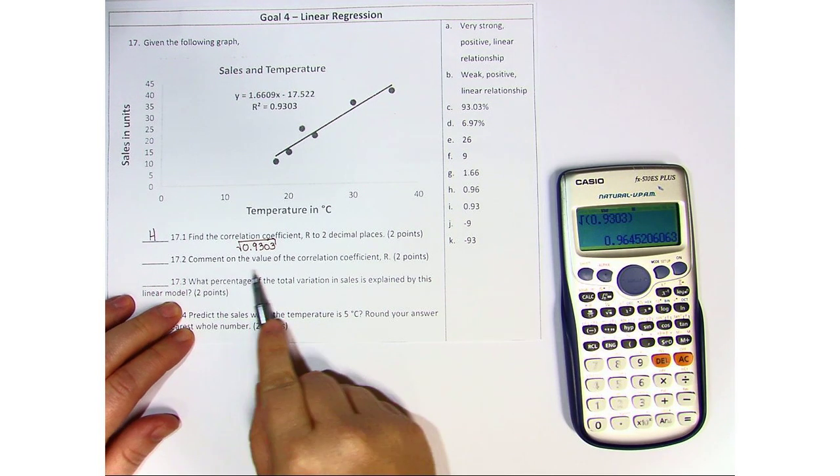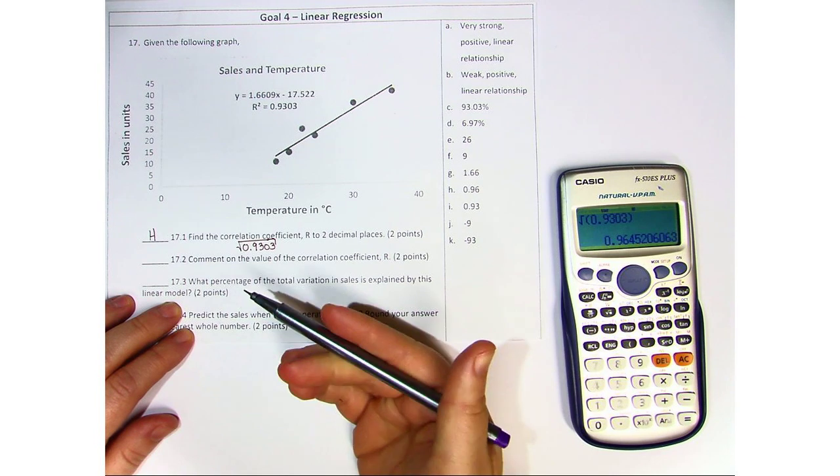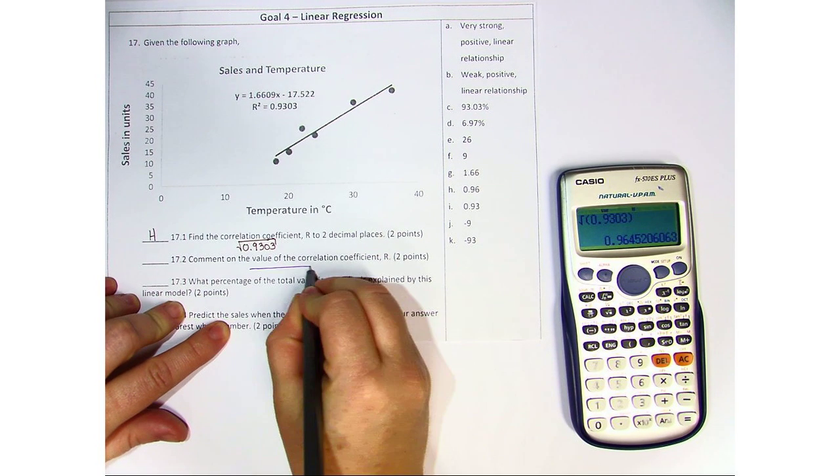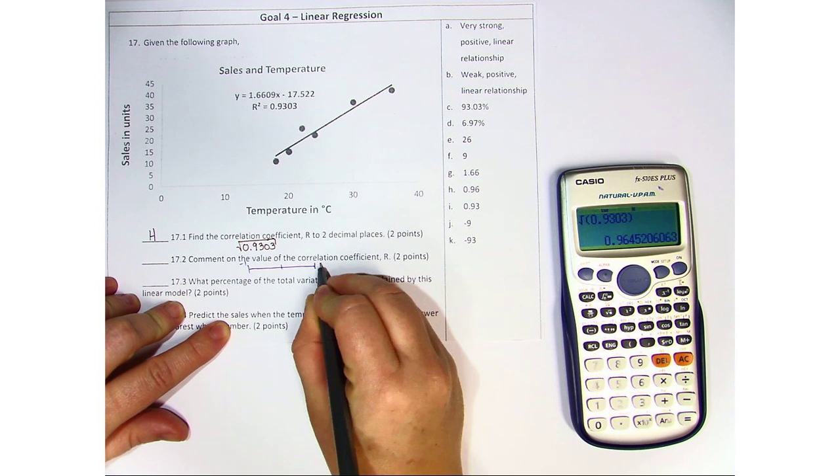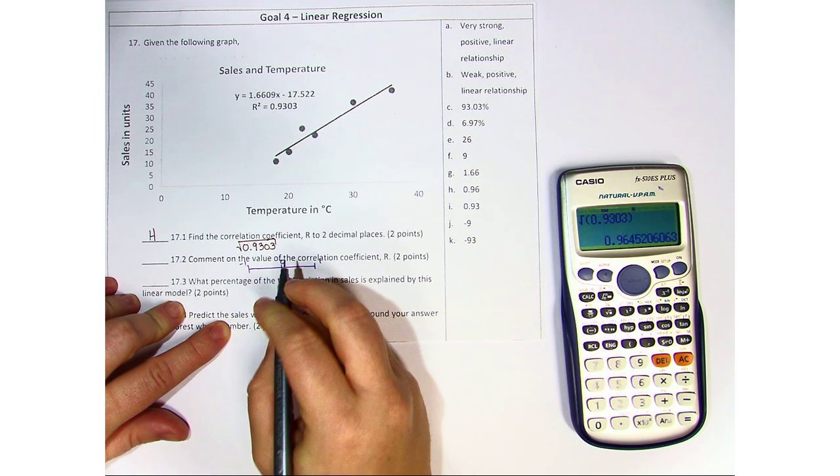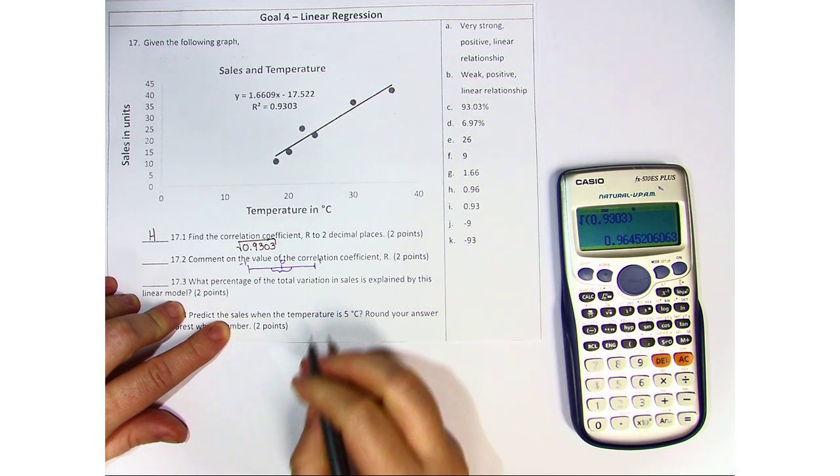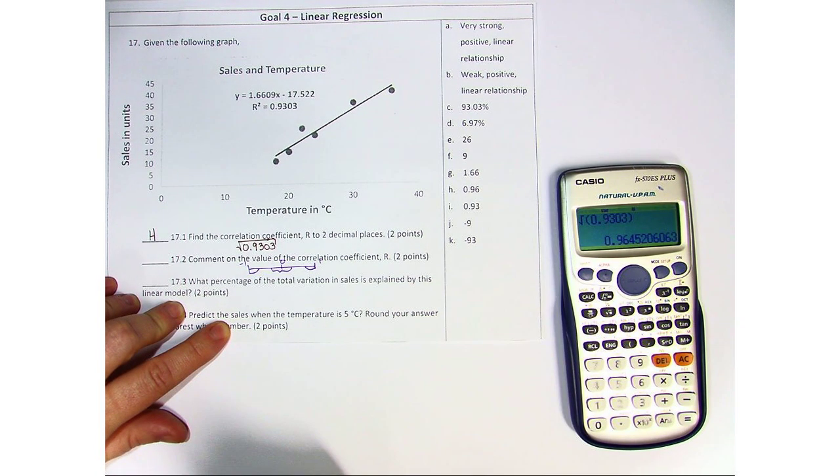The second question says, comment on the value of the correlation coefficient R. Now this is where it's very strong, very weak, things like that. As you'll remember, we have a set of numbers between negative 1 to positive 1 with 0 in between. If it's close to 0, it's considered very weak. But if it's close to positive 1 or negative 1, it's considered strong.